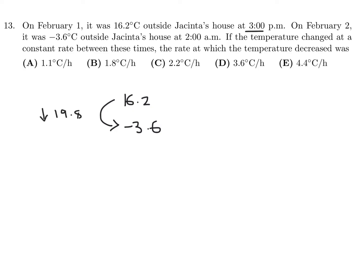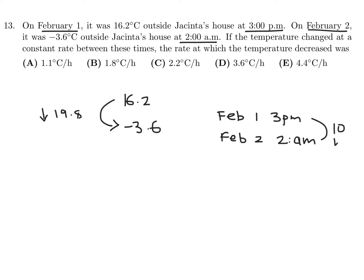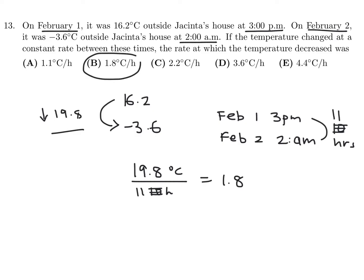The time period is from 3 p.m. on February 1st to 2 a.m. on February 2nd — that's 9 plus 2, which is 11 hours. Taking 19.8 Celsius divided by 11 hours gives 1.8 degrees per hour. So number 13 is B, as long as you don't make silly arithmetic mistakes.